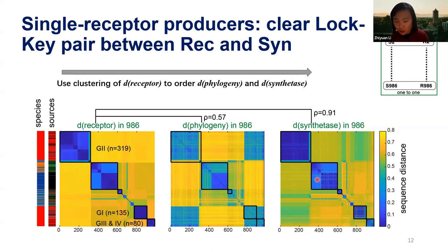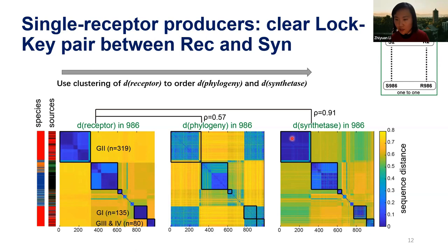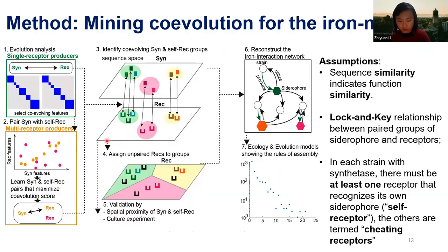But we know there are single-receptor producers and also a large number of multi-receptor producers. Can we identify all the lock-and-key pairs between the synthetases that make the siderophore and the receptors that uptake it? So again we use coevolution. I will ignore the technical and mathematical details and just show the workflow.